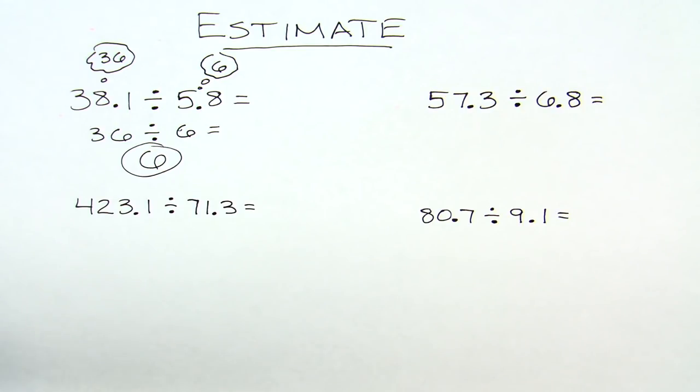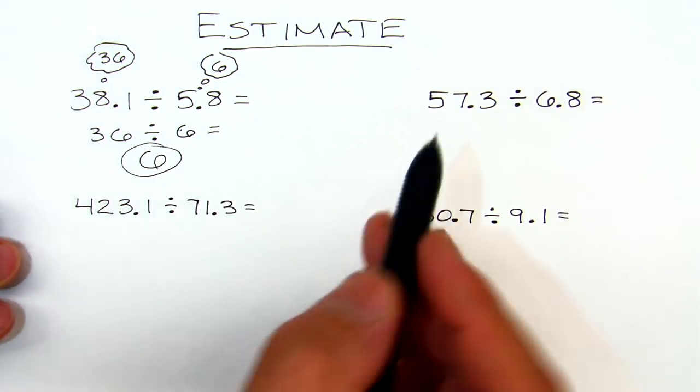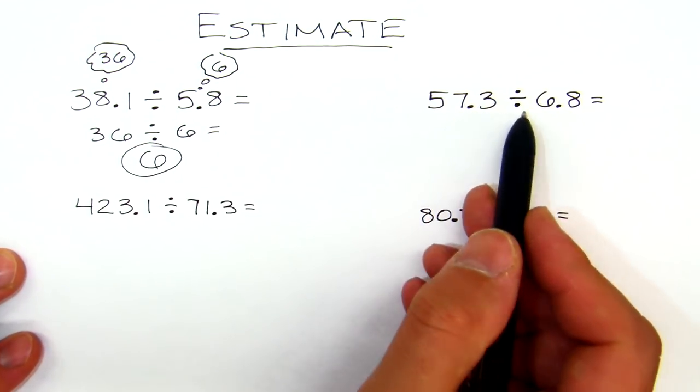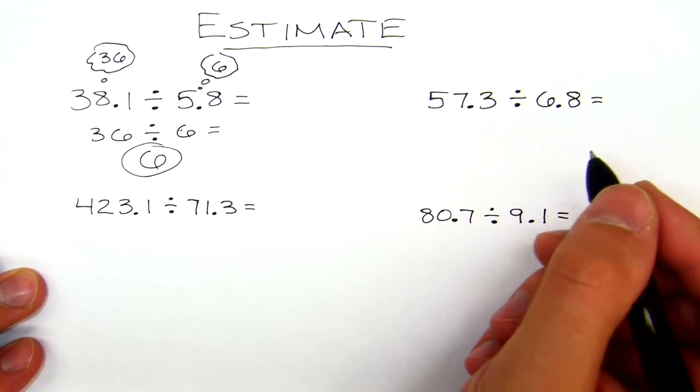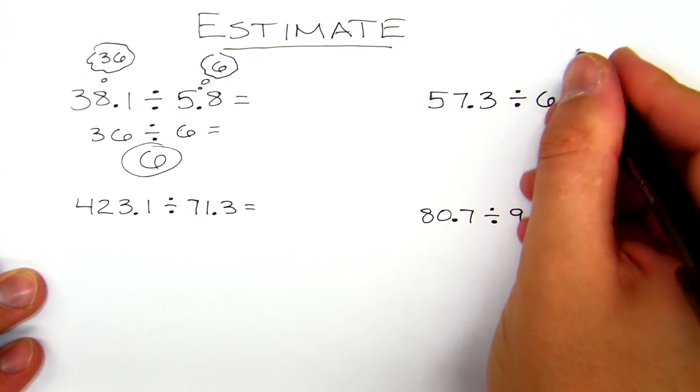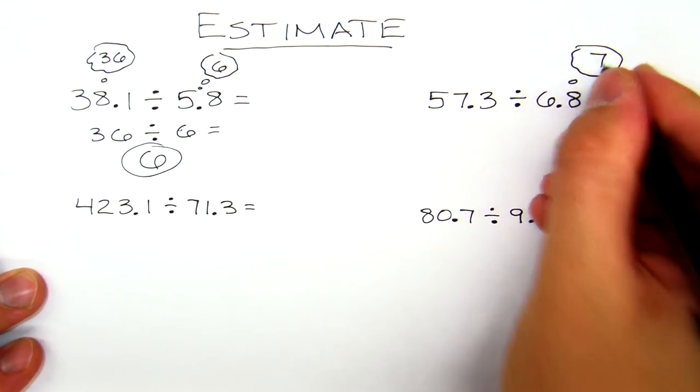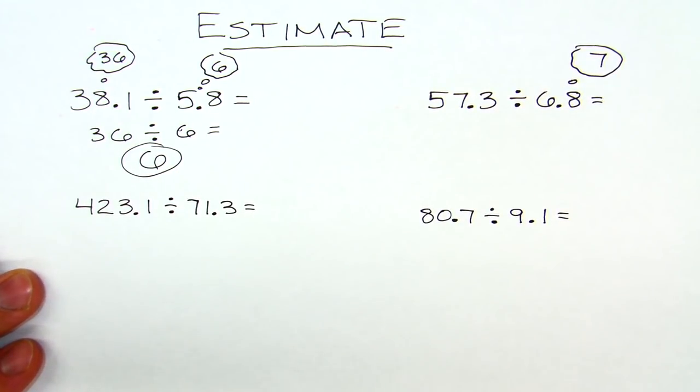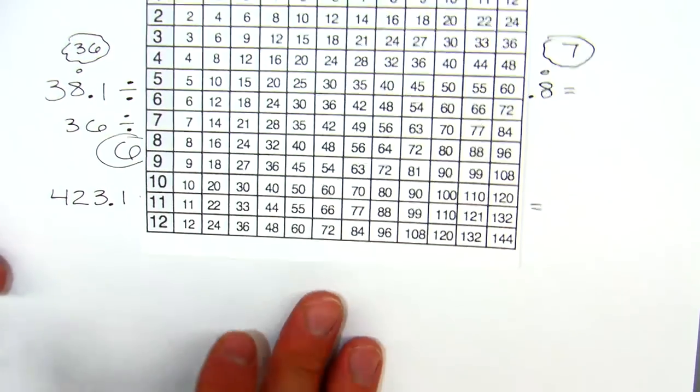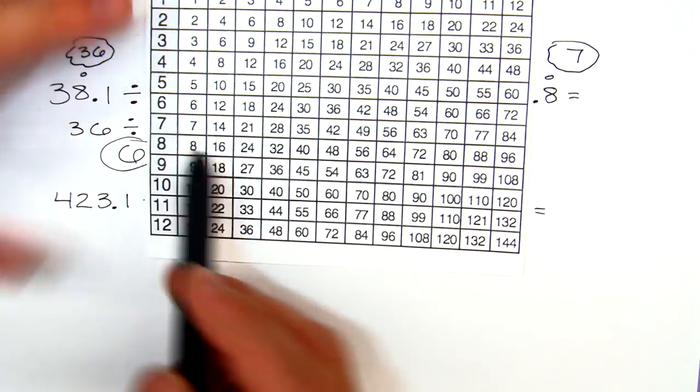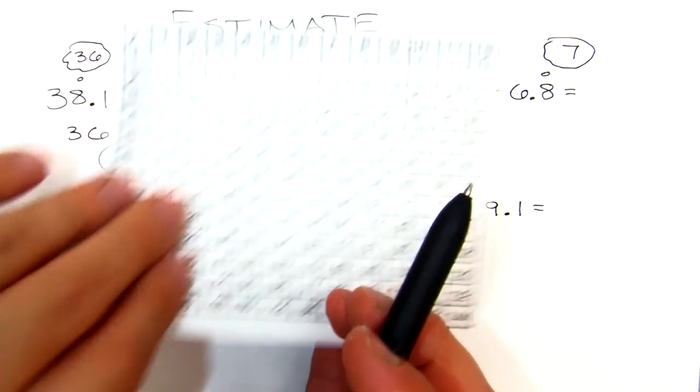In this next one, 57.3 divided by 6.8. Again, what's 6.8 close to? We're thinking it's close to 7. So now what multiple of 7 is close to 57? Again I'm doing these in my head but I'm gonna show you my thinking. So I'm gonna follow 7 over and I need it to be close to 57.